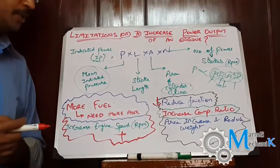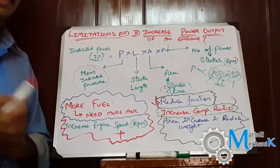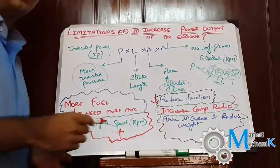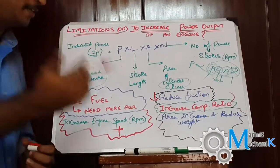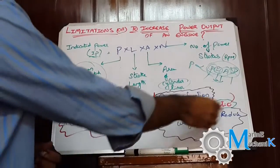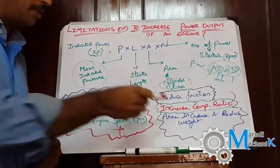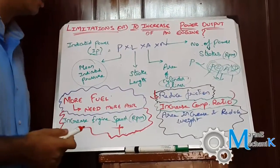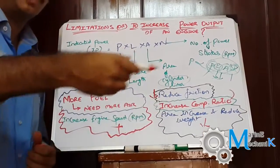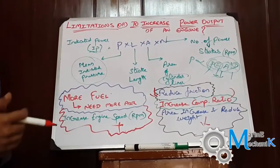Increasing the compression ratio will definitely improve power output — we'll cover that in a separate video. Another approach is weight reduction: for the same engine, reducing the weight of the piston, cylinder liner, or crosshead arrangement means that as the weight comes down, power output increases for the same engine dimensions.